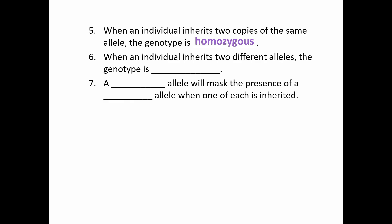Somehow the white trait stayed within the lineage without showing in that second generation. The true breeding plants had two copies of the same allele, and we would call that genotype homozygous. But when you're an individual and you get two different alleles, we call you heterozygous. And in the heterozygous individuals, the dominant allele can mask the recessive allele.